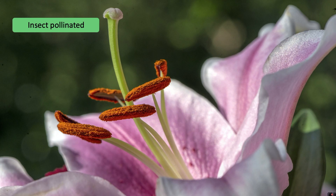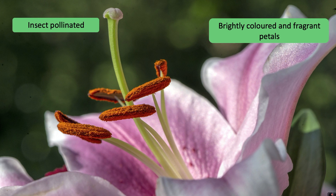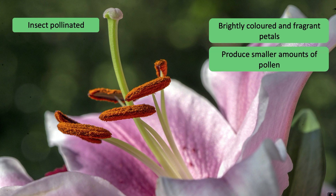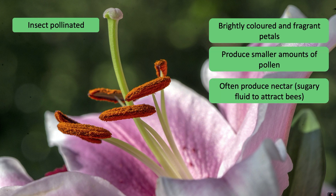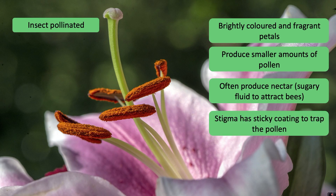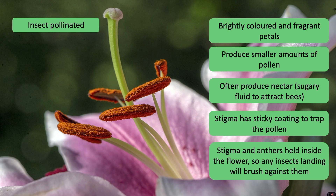With insect pollinated plants, the pollen from the anther of one plant is transferred by an insect to the stigma of another plant. Insect pollinated plants have brightly coloured and fragrant petals. They produce smaller amounts of pollen and often produce nectar, which is a sugary fluid to attract bees. Their stigma has a sticky coating to trap the pollen, and the stigma and anthers are held inside the flower so any insects landing will brush against them.